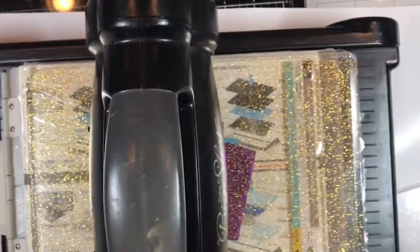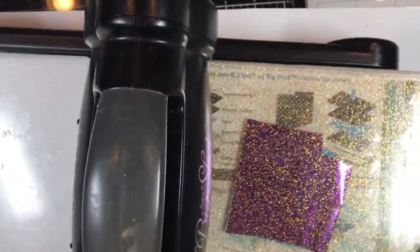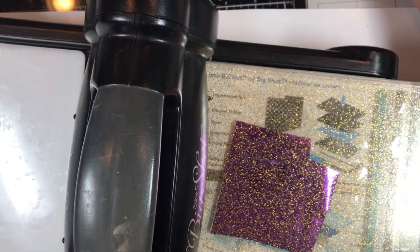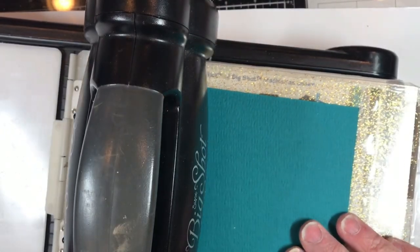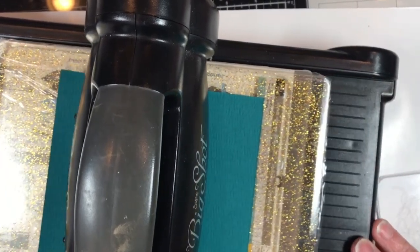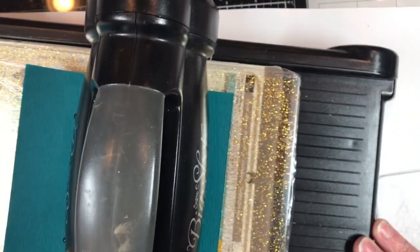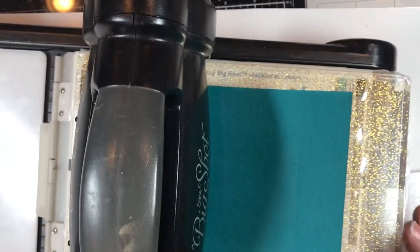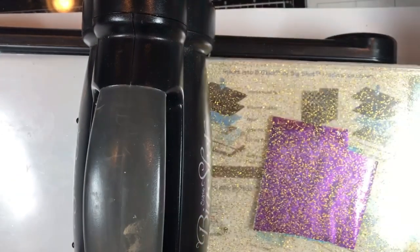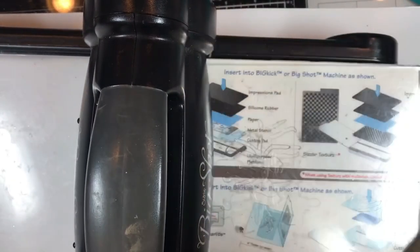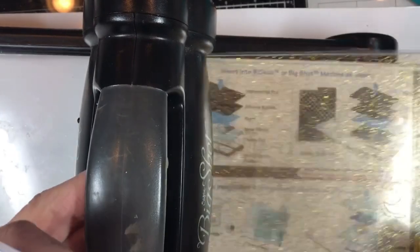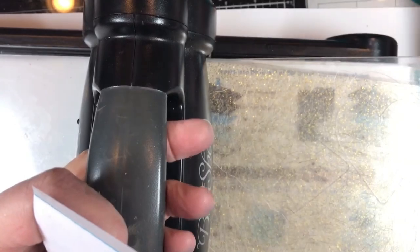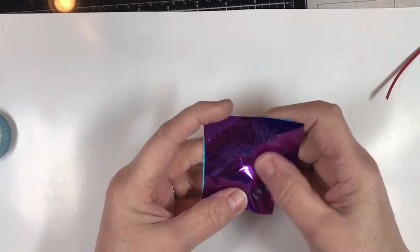And I always run everything through twice, no matter what I do. So the pressure from the Big Shot will push that down into the thing. Now if you feel that you don't have any resistance, put a piece of paper on top of that. You want to use the pressure, same as if you were doing an embossing folder or a die. You want to get the pressure there. So I'm just going to pull this off the plate.